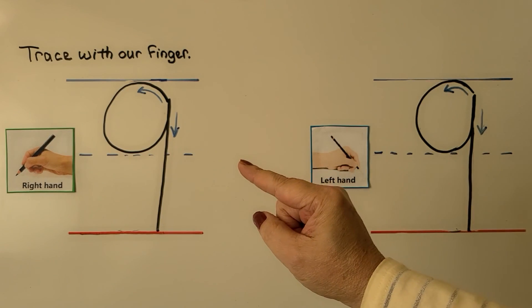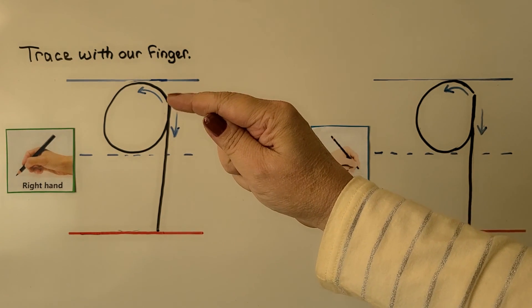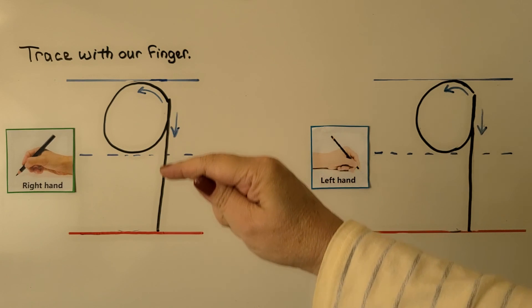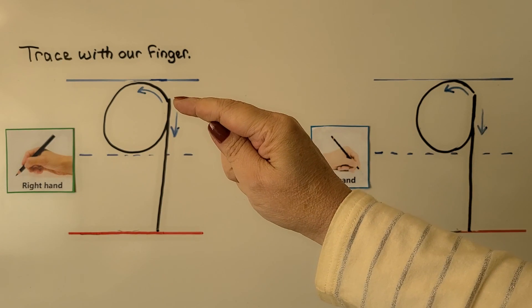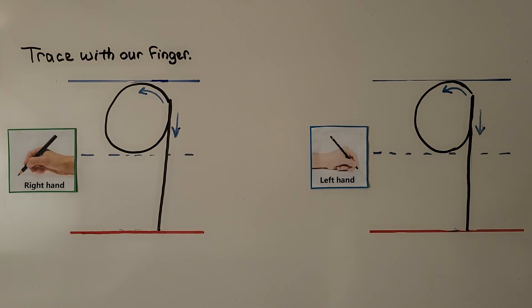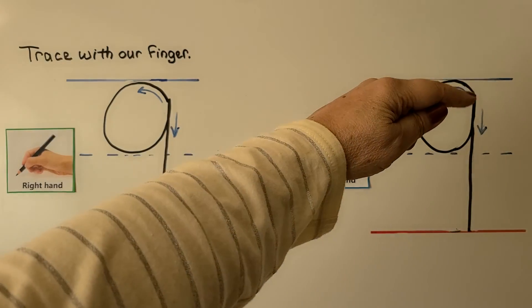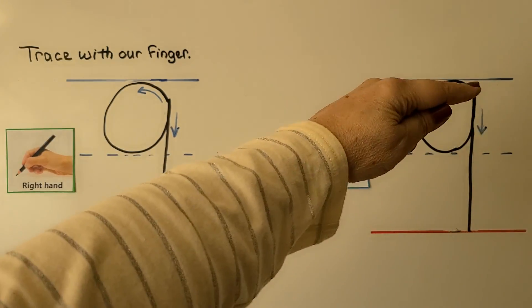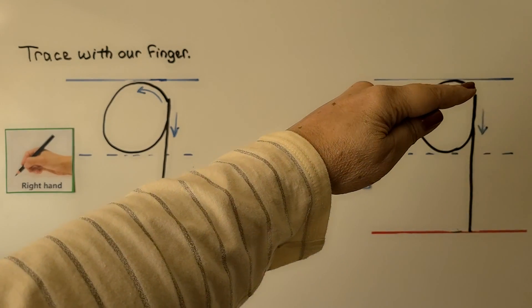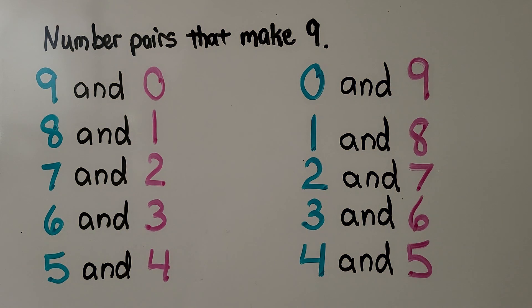We can trace the number 9 with our finger. For our right hand, for students who write with this hand, we start here below the top line, about right here, and we go around and back to where we started and come down. We can do it with our left hand the same way. We start here just below this line, we go around and bounce down to the line. We start here, we go around and up and down to the line. 9.